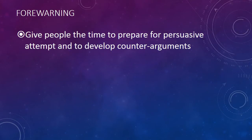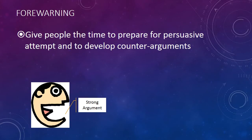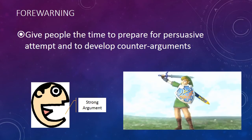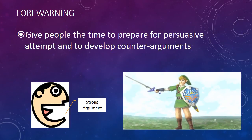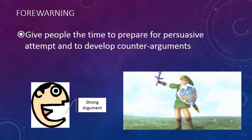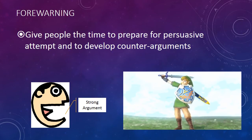Forewarning is another way to help people resist persuasion. When you forewarn somebody, you're essentially saying, 'Hey, this persuasive attempt is coming,' and that person now has the time to gear up and make sure they are not persuaded. For example, when I go to buy electronics, I know they're probably going to make a strong argument for me to buy a warranty. But because I've researched the electronics well and know they tend not to break, I have time to develop counter-arguments. So when I go, I already know what I'm going to say and can resist that persuasive attempt.